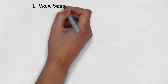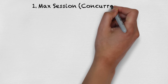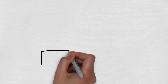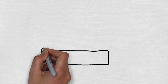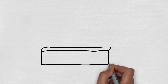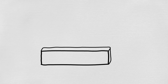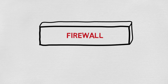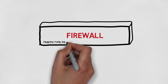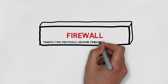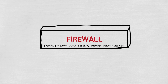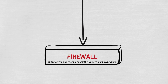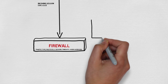Number one: maximum sessions, also referred to as concurrent sessions. As their names imply, this refers to the total number of firewall sessions a box can support. Like connections per second, this can vary greatly from network to network depending on factors like traffic type, protocols, session timeouts, users, and many others. Thankfully, as technology has evolved, next-gen firewall vendors have added plenty of memory to support most normal networks for their target market.